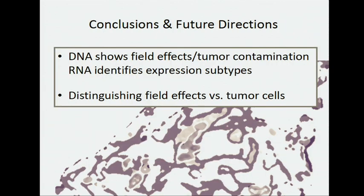In conclusion, the DNA results from our analysis of the TCGA double normal data show strong evidence for either field effects or tumor contamination. Our team has work to do in trying to figure out exactly how to distinguish those two, or whether there are other ways to take advantage of this very rich data to tease those two things apart. The pathologic evaluation can get us partly there, but there's a lot more we can do, particularly in those triplets, to understand where some of this genetic heterogeneity is coming from. In contrast, the RNA really shows us the expression subtypes and is not strongly indicative of tumor contamination.